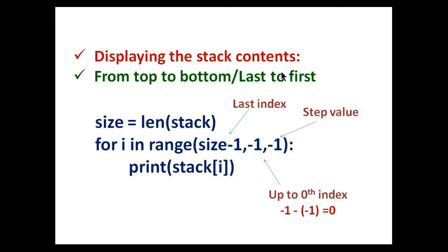Next is displaying the stack contents from top to bottom, or we can say in a list from last to first. For that, first I use the len function to find the size of the stack. Then I use a for loop to display the elements from the last to the first. The index of the last element is size minus one, because the list index starts from zero and ends at size minus one. The step value here is minus one because we have to move from last to first.